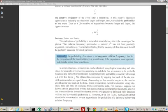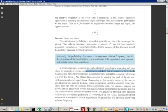Now they say sometimes we don't necessarily use this approach. In some situations, probabilities can be obtained using logical reasoning and intuition. For example, if we have an ordinary six-sided die that we assume to be perfectly balanced, then intuition tells us that the probability of tossing a two is one-sixth. We obtain this by arguing that each of the six possible outcomes has an equal chance, so that over the long term, the number two will appear one-sixth of the time.